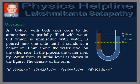A U-tube with both ends open to the atmosphere is partially filled with water. Oil, which is immiscible with water, is poured into one side until it stands at a height of 10 mm above the water level on the other side. In the process, the water rises by 65 mm from its initial level as shown in the figure. The density of oil is — the options are 650 kg per meter cube, 425 kg per meter cube, 800 kg per meter cube, and 928 kg per meter cube.